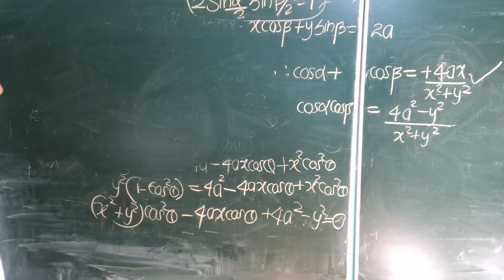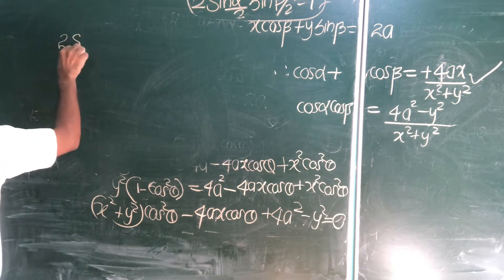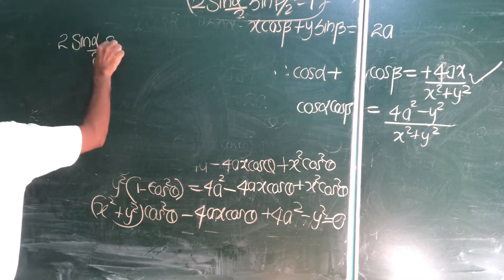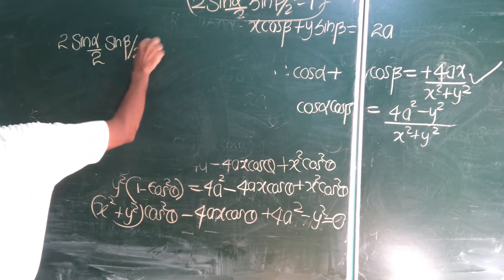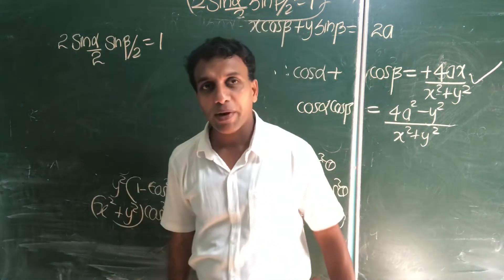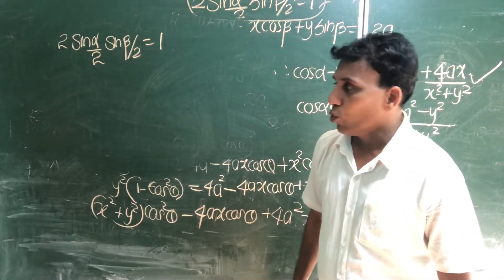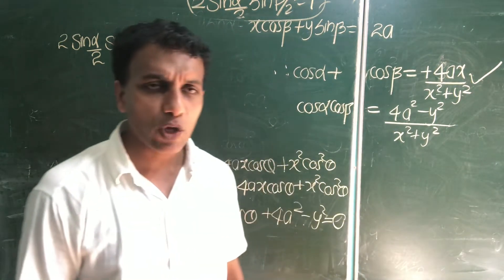Now, see, the second data, 2 sin alpha by 2, sin beta by 2 equal to 1. Now, I try to square it. Square this equation.